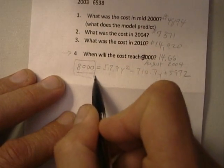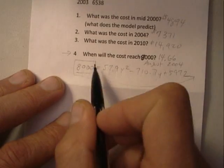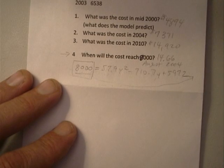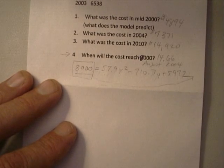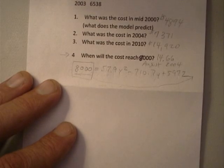I could take this $8,000 and move it over to this side. I could subtract it so that the left-hand side is zero, and then I can look for a zero. Finding the zero of that new equation where the left-hand side is zero will also be the answer to this question.